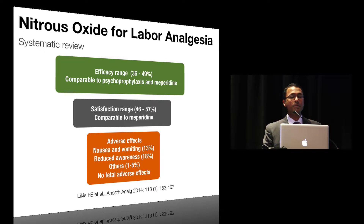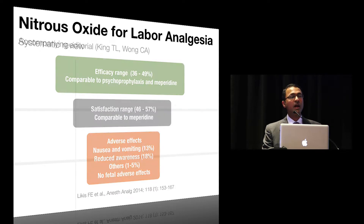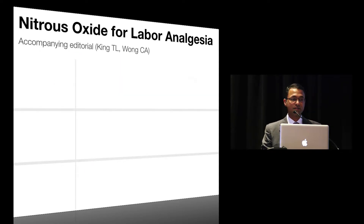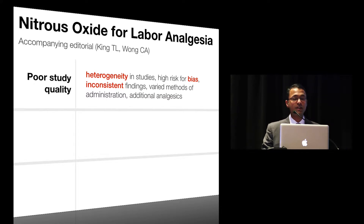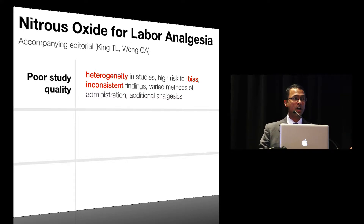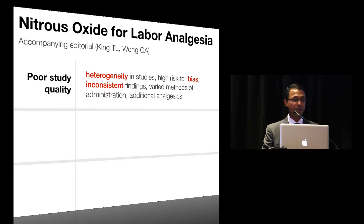This paper was accompanied by an editorial by Ms. King and Dr. Wang, which highlighted the drawbacks of these studies. They commented on the poor quality of studies, especially wide heterogeneity with a high risk for bias, inconsistent findings between studies, and highlighted the varied methods of administration — continuous versus intermittent, different concentrations — none of which were standardized. So it was very hard to draw any meaningful conclusions from the study.